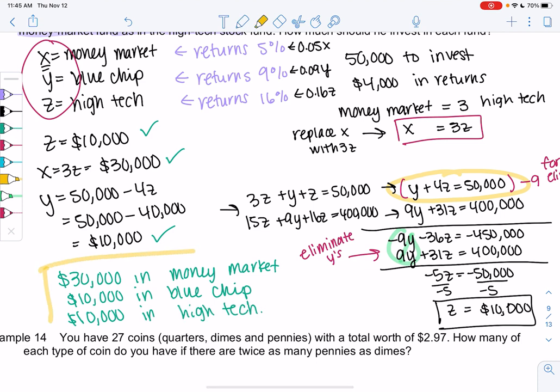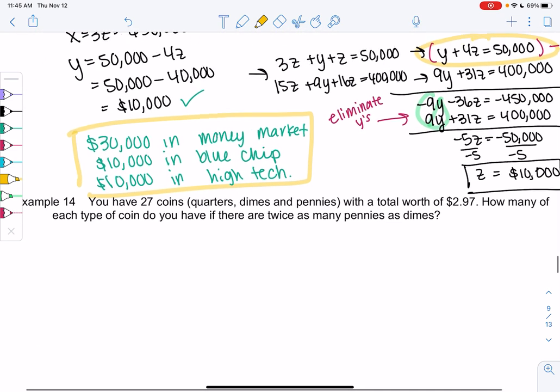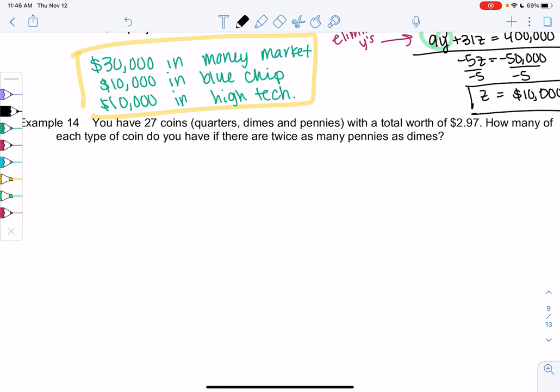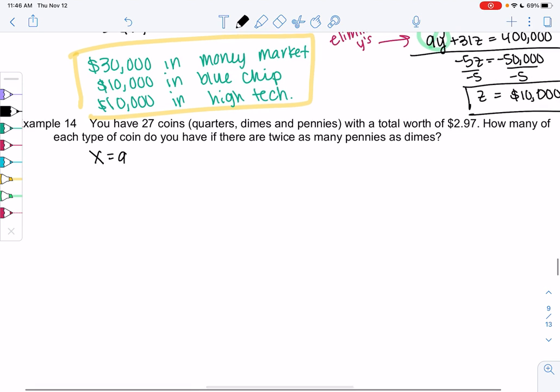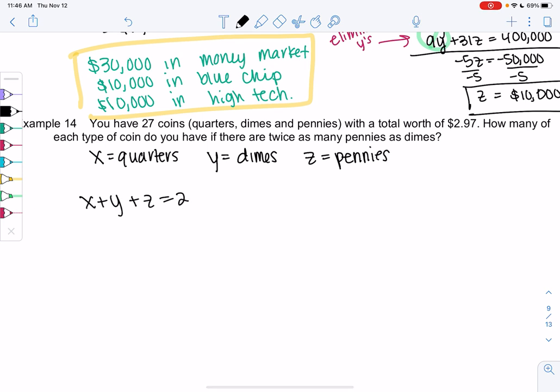We'll do one more of these. The last one's kind of like a puzzle. You have 27 coins in example 14. Quarters, dimes, and pennies. So those sound like my three variables. X is my quarters. Y is my dimes. And then Z is my pennies. And because I have 27 coins, I know that X plus Y plus Z is 27, because we have 27 total coins.